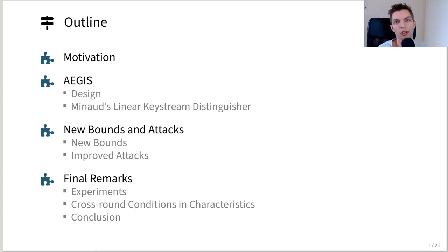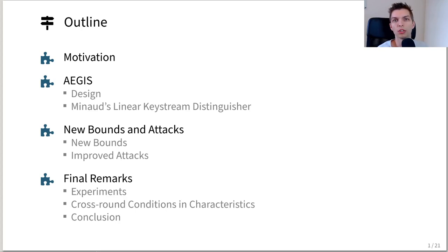Today we're going to talk about our motivation — why we chose to analyze Aegis in the first place. Then we will quickly recap the design of Aegis and previous analysis. Afterwards we will show new bounds and attacks on the keystream bias, and then we will conclude with some final remarks.